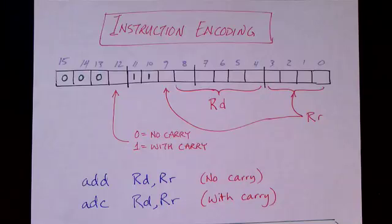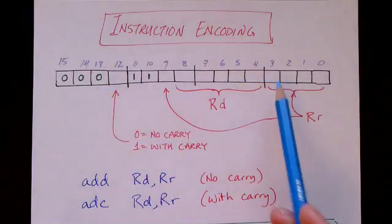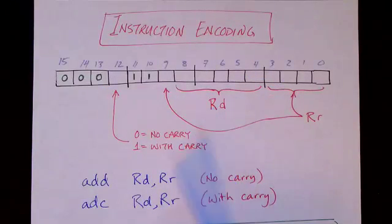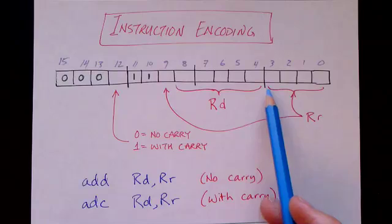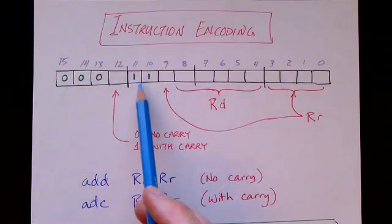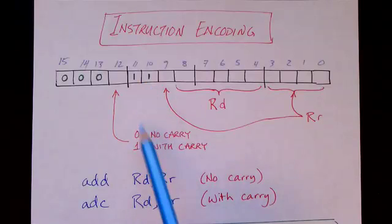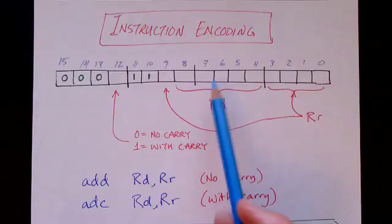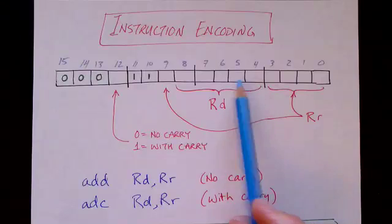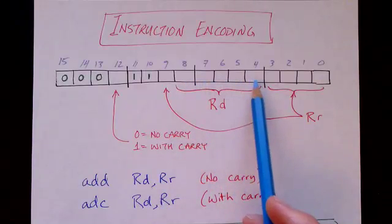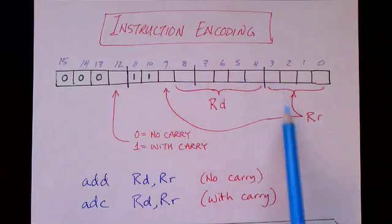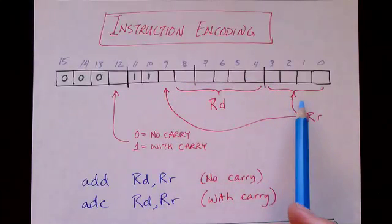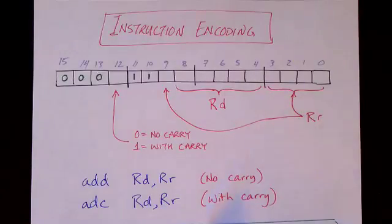Each assembly language instruction is encoded by the assembler into a bit pattern called the machine instruction. Here is an example of the ADD and ADD with carry instructions showing how they are encoded into machine code. We have several bits that indicate which operation it is, and one of these bits determines whether it's ADD or ADD with carry. We have 32 registers, so we need 5-bit fields to specify which register. In some cases the fields are split apart into various pieces.